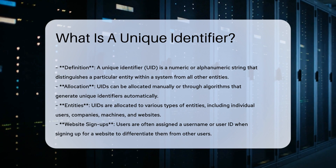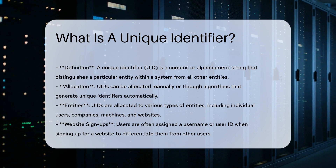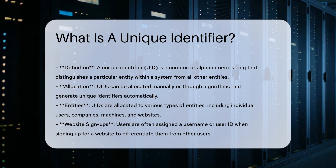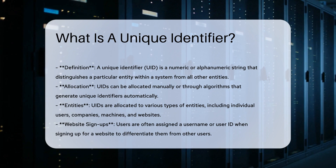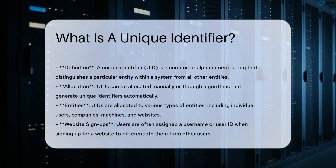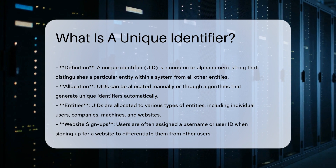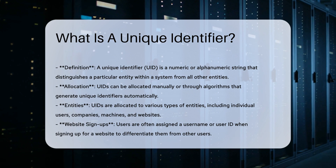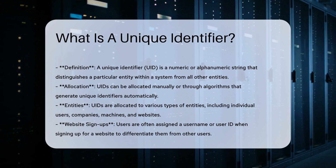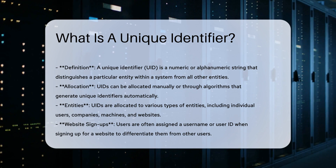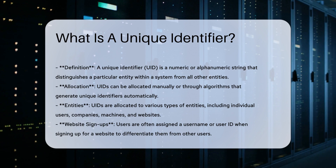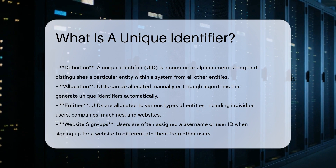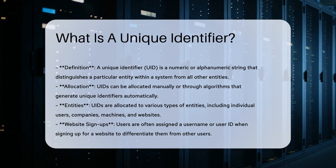This identifier is crucial for ensuring that each entity can be accessed and interacted with uniquely. UIDs are allocated to various types of entities, including individual users, companies, machines, and websites. The allocation can be done manually or through algorithms that generate unique identifiers automatically.